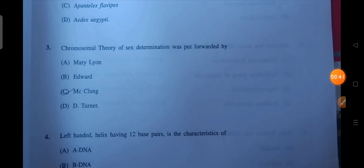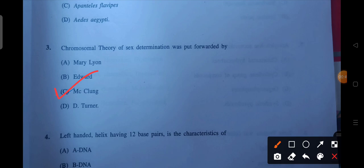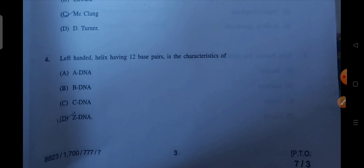Next question: chromosomal theory of sex determination was put forward by. So C will be the correct answer. Next is left-handed helix having 12 base pairs is the characteristic of Z DNA. This is the characteristic.